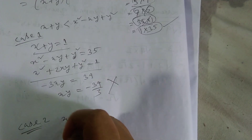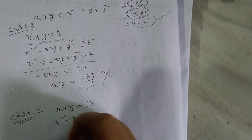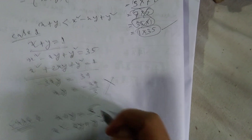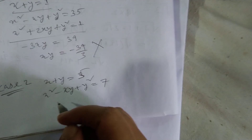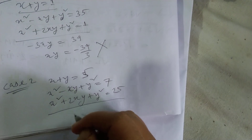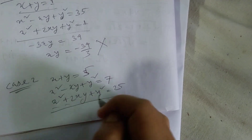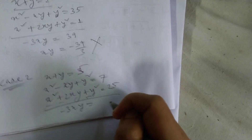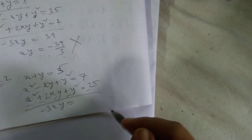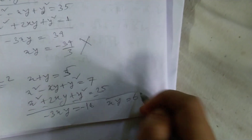Case 2: x + y = 5 and x² - xy + y² = 7. Since (x+y)² = x² + 2xy + y² = 25, subtracting x² - xy + y² = 7 gives 3xy = 18, so xy = 6. We get a positive value, xy = 6, so we take this case.